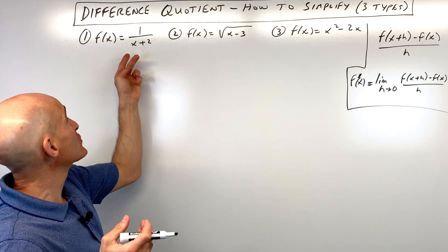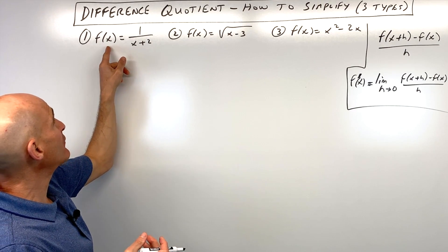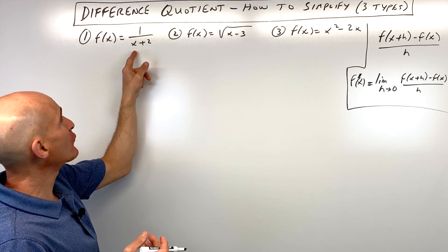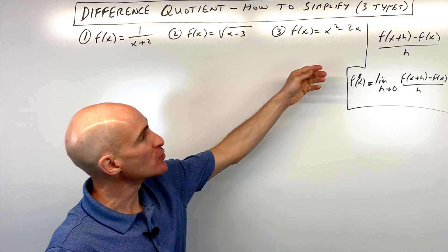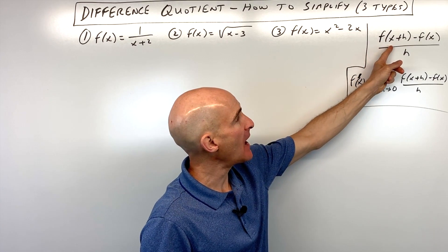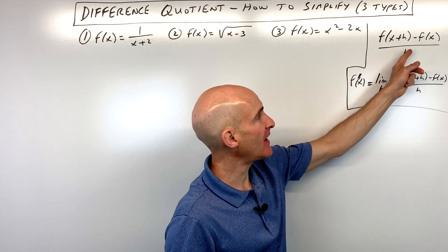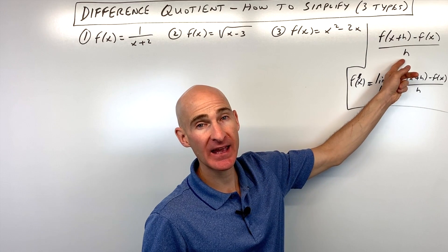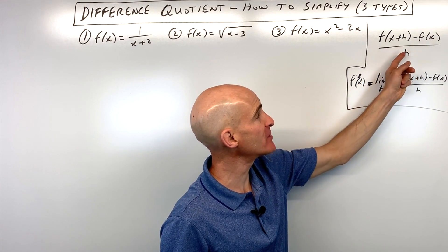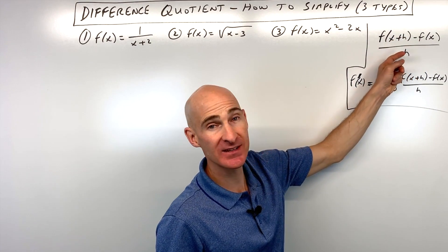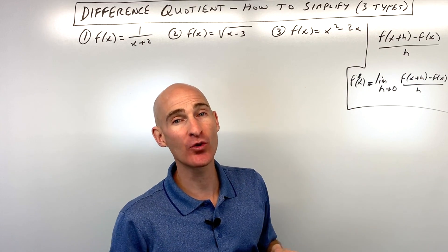We're working with the difference quotient. For number one, we've got f of x equals one over x plus two. The difference quotient is f of x plus h minus f of x, divided by h. Remember, subtract is the difference, dividing is the quotient — altogether, that's the difference quotient.